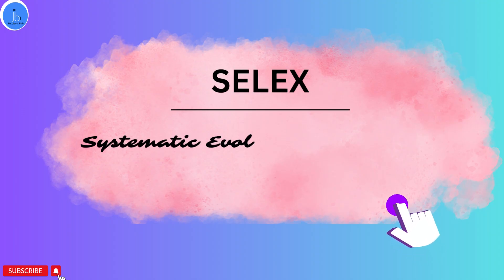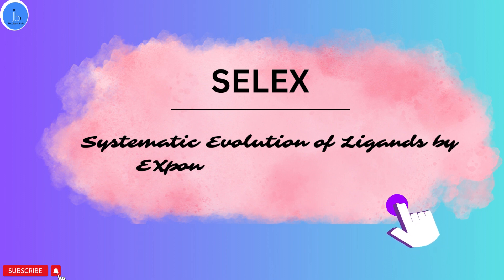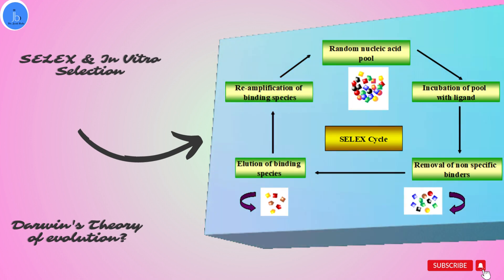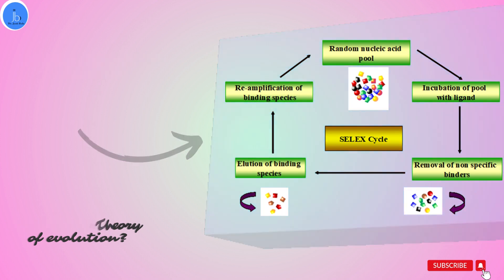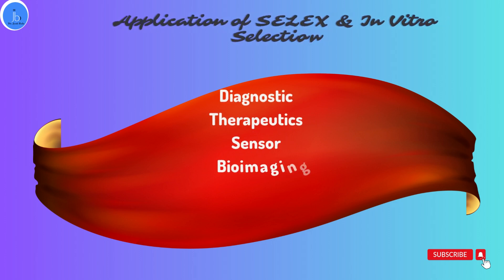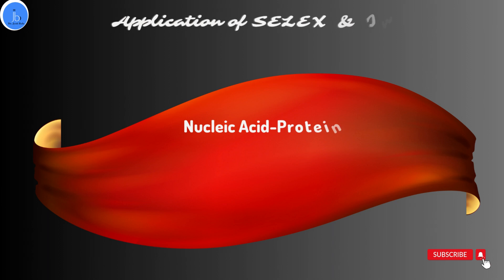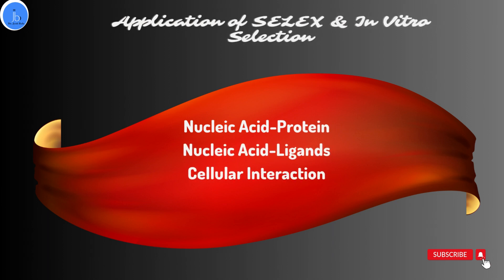Let's first understand what is SELEX. SELEX is a Systematic Evolution of Ligands by Exponential Enrichment method. This is not a protocol-based technique, but a principle-based technology — it is basically based on Darwin's principle. It's a powerful technique that allows scientists to identify nucleic acid molecules that bind specifically to a target molecule such as a protein or small molecule. SELEX can be used to discover new drug targets, develop new diagnostic tools, biosensors, and study interaction between nucleic acids and different molecules. You can decode cellular mechanisms based on nucleic acids and how they are involved in biological cellular regulations.